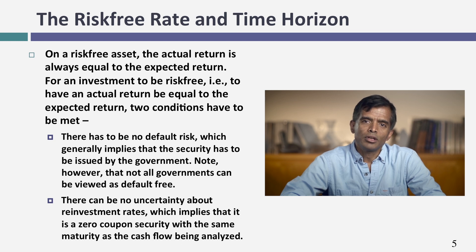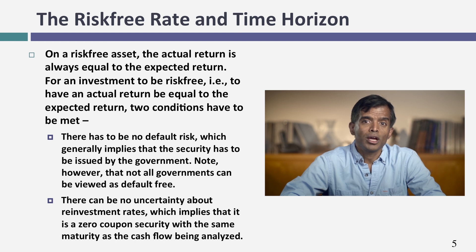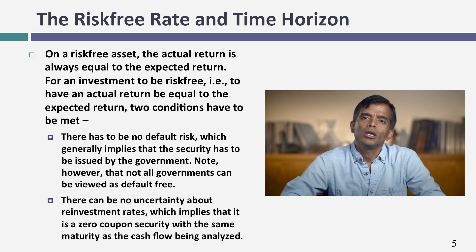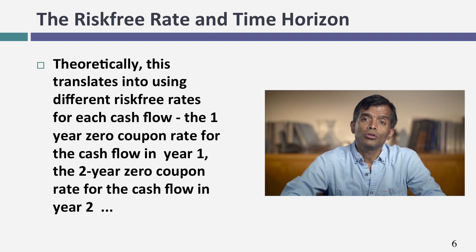If you have a five-year cash flow, a six-month T-bill is not risk-free, even if you think the U.S. Treasury is default-free. Here's why: at the end of six months, you've got to reinvest — and reinvest again — at rates you do not know right now. So for something to be risk-free, it's got to be issued by a default-free entity and match up to when the cash flow comes in. When you do investment analysis, you often have cash flows at different points in time: year one, two, three.